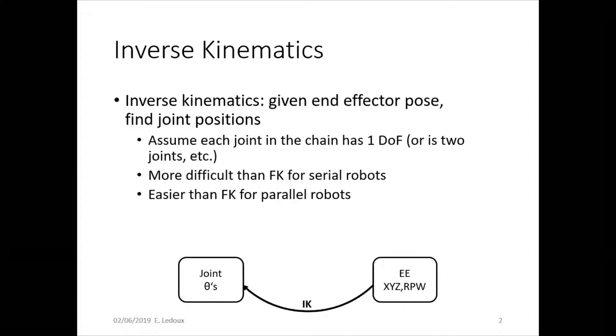Similarly for forward kinematics, assume each joint in the chain has one degree of freedom, otherwise it would be two joints. This is more difficult than forward kinematics for serial robots, but it's easier than forward kinematics for parallel robots because there are fewer possible solutions.